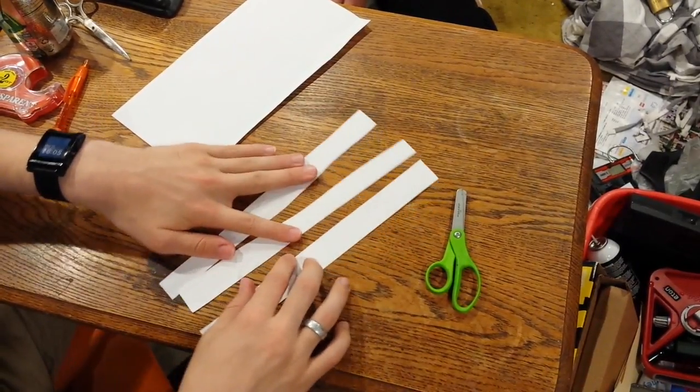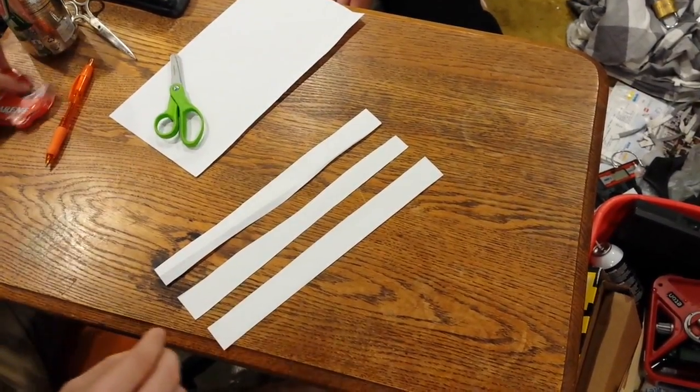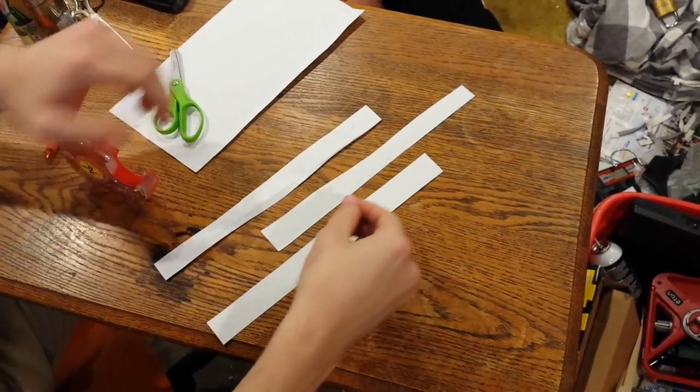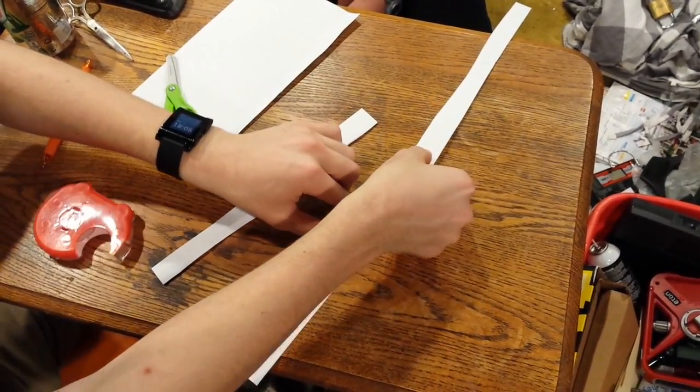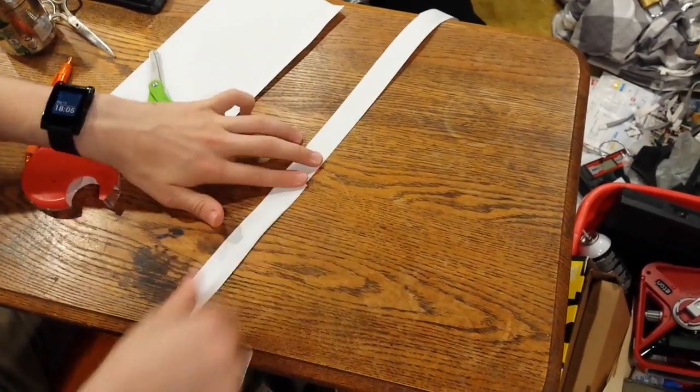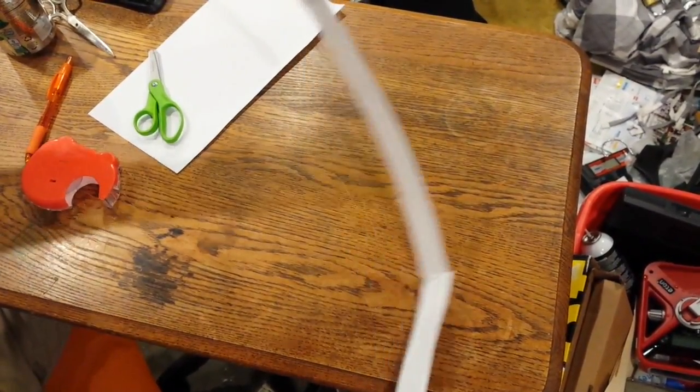So now we have our three pieces of paper. I know they're not perfect, but again, I'm using kid scissors here. We're going to just take little bits of tape and tape them together. Boom, long strip of paper, about two and a half feet long.